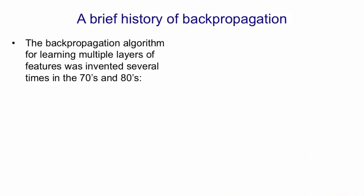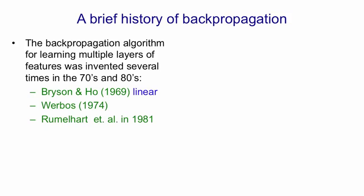Backpropagation was invented independently several times in the 70s and 80s. It started in the late 60s with control theorists Bryson and Ho, who invented a linear version of backpropagation. Paul Werbos went to their lectures and realised it could be made non-linear, and in his thesis in 1974, he published what's probably the first proper version of backpropagation. Rumelhart, Williams, and I invented it in 1981 without knowing about Paul Werbos' work, but we tried it out, and it didn't work very well for the first thing we tried it for, so we abandoned it.